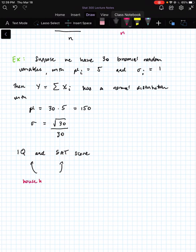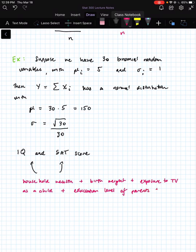But they're normally distributed because they're actually the sum of a lot of different random variables. So there's the random variable of household wealth, if we could quantify that, plus the random variable of birth weight, where we also quantify that, exposure to television as a child if we could quantify that.